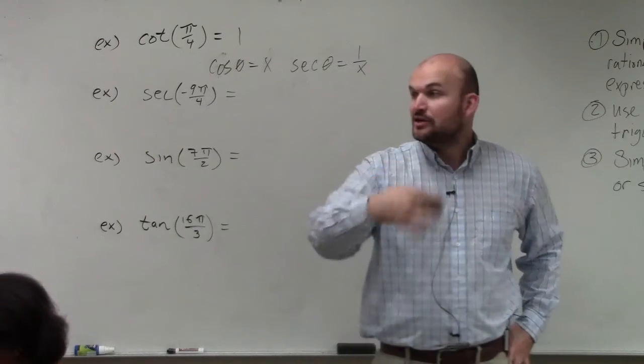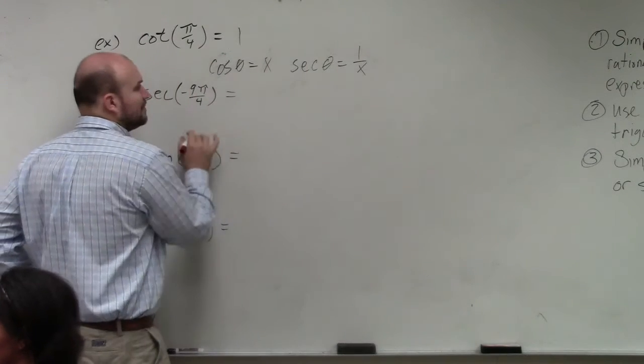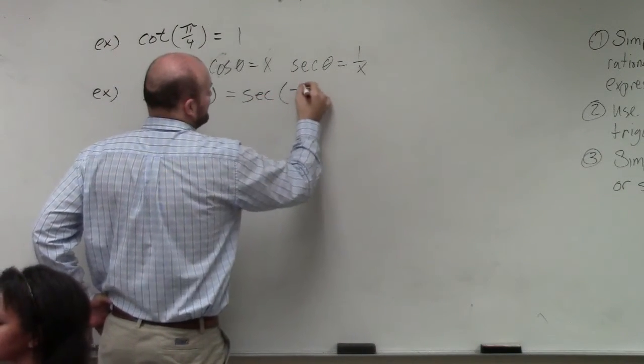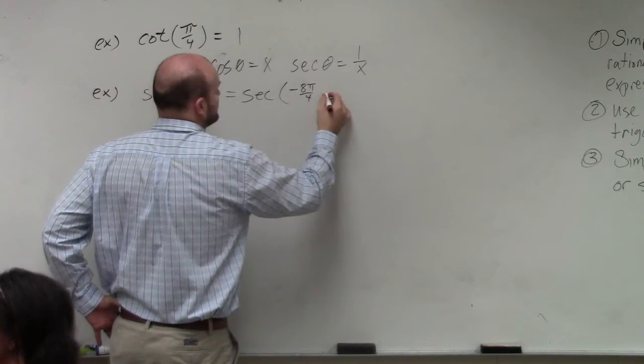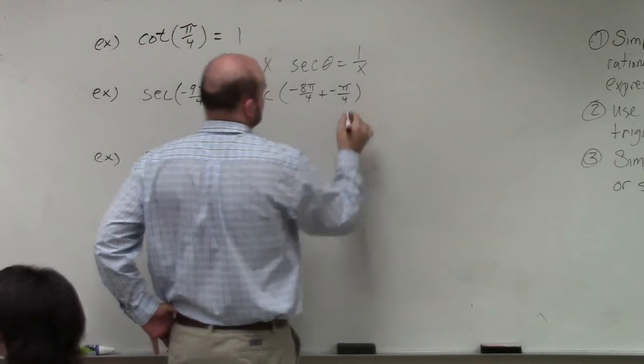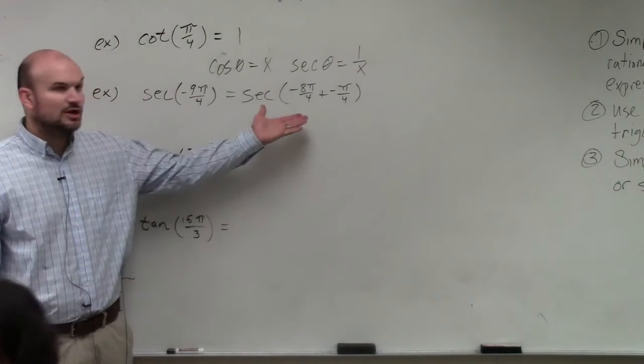You don't have to do this. You can easily sketch it on your own. However, I believe this is a little bit easier to do. What I'm going to do is I'm going to rewrite secant as -8π/4 plus -π/4. So this is what we call using period as an aid.